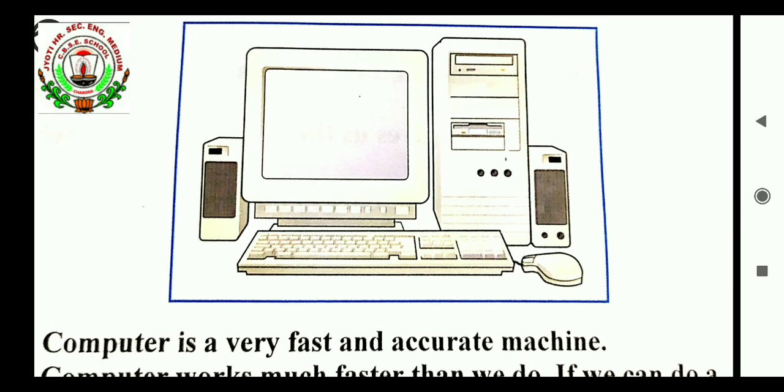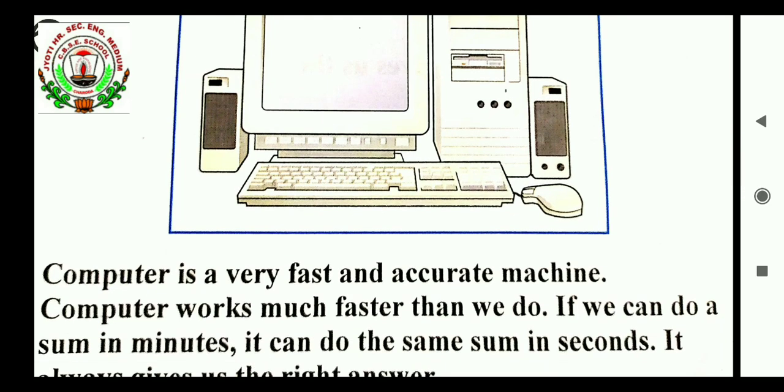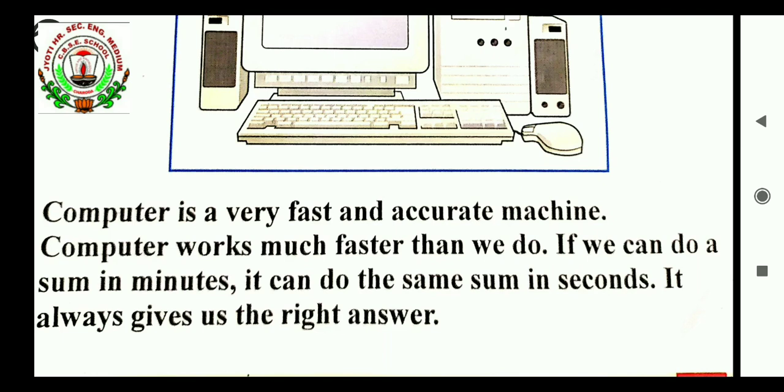Can you see the picture of Computer? Computer is a very fast and accurate machine. Computer work much faster than we do. Computer work means computer is much smarter than human being. If we can do a sum in minutes, it can do the same sum in seconds. Like, we can do 14 plus 14. 14 plus 14 we will add in one minute, but computer works within a second. It also gives us a right answer.